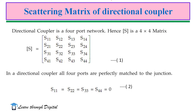Now we derive the scattering matrix of the directional coupler. Since it is a four-port network, the S-matrix is a 4×4 matrix (Equation 1). Applying properties: all four ports are perfectly matched, so S11 = S22 = S33 = S44 = 0. Applying symmetry, Sij = Sji, so S23 = S32, S34 = S43, S13 = S31, S41 = S14, S24 = S42.